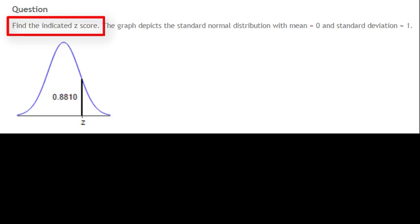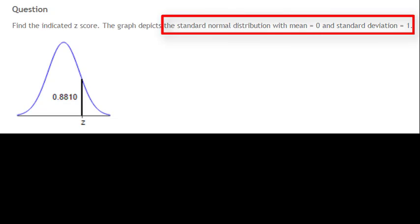Here's a problem where you're asked to find the indicated z-score. Furthermore, we're told that the graph depicts the standard normal distribution with a mean equal to zero and a standard deviation equal to one.